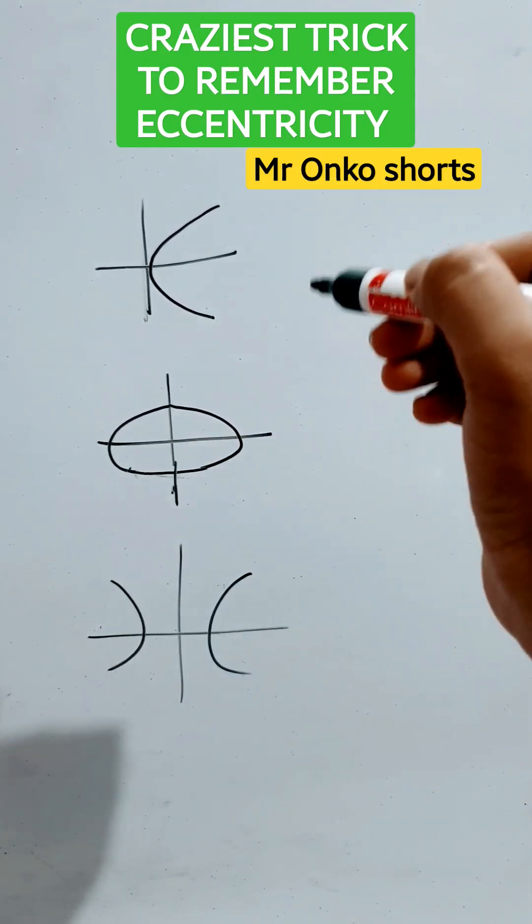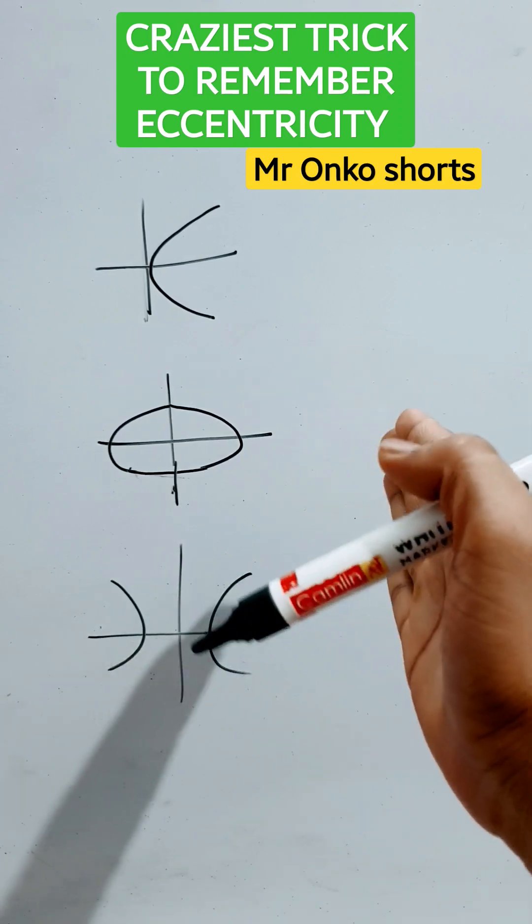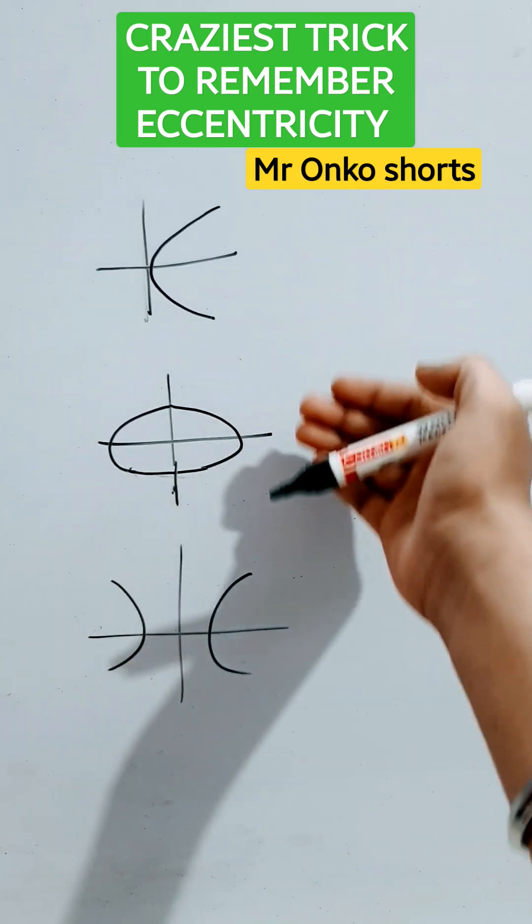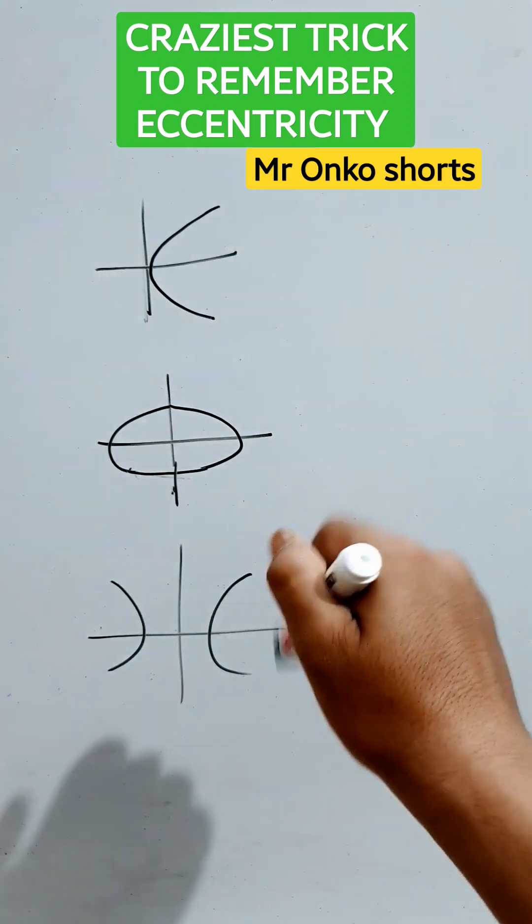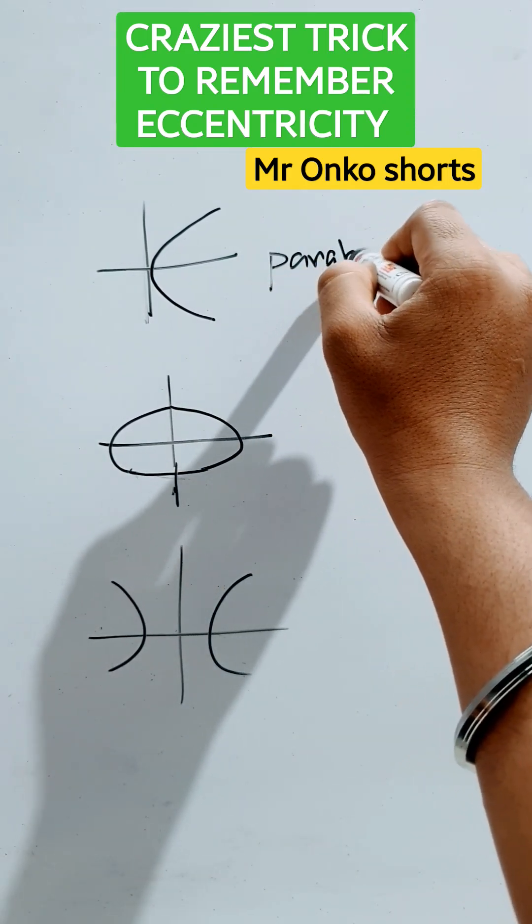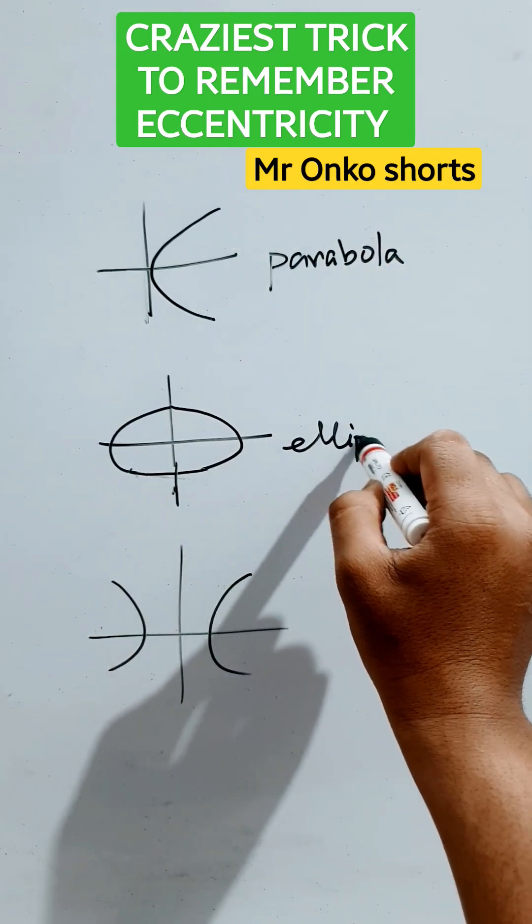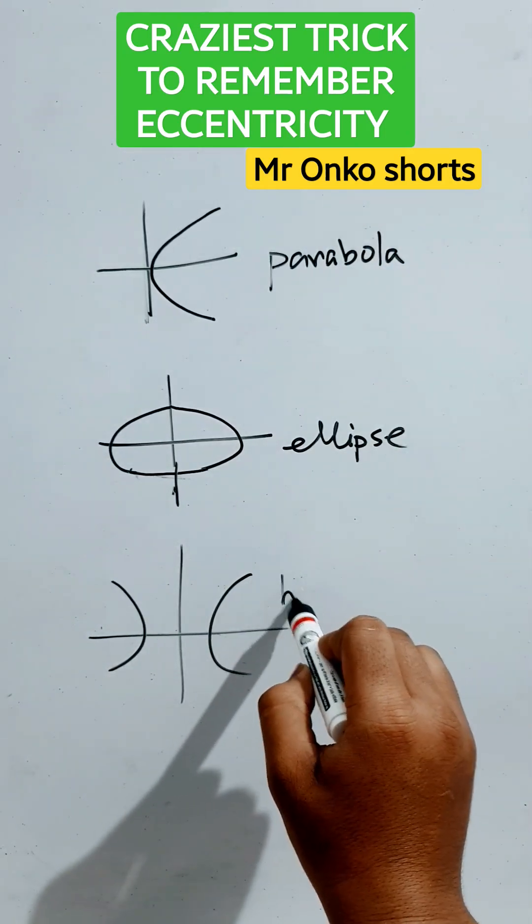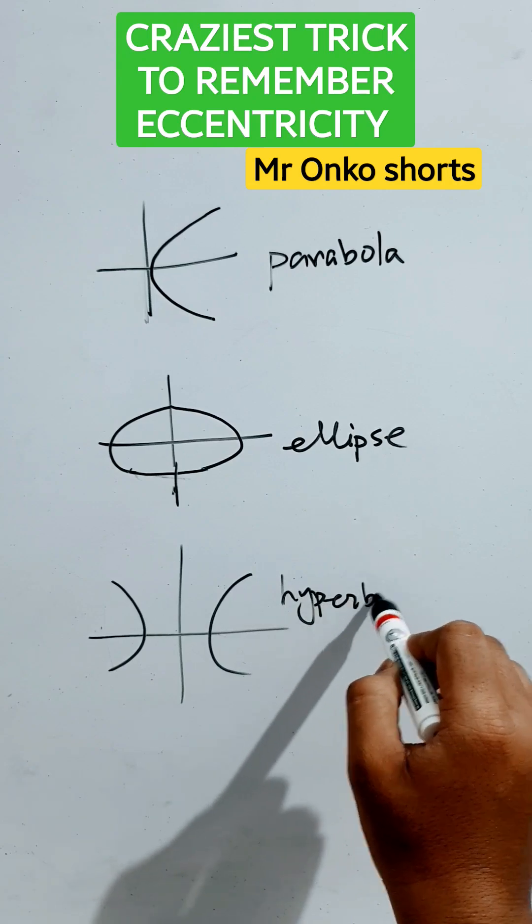Today, we will learn the trick, the craziest way to remember the eccentricities of the given conics. This is parabola, ellipse, and hyperbola.